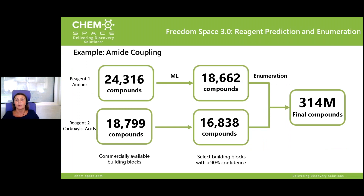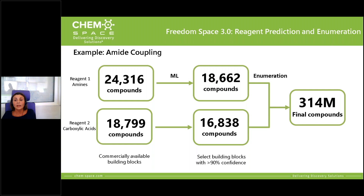The general scheme for generating this space applies machine learning models to select reagents for generating molecules with high synthetic viability by filtering out potentially bad reagents. Enamine provided us with statistics for each reagent for particular reactions. We used ML classification to filter out potentially bad reagents from commercially available reagents, selecting a threshold of 0.8 to filter out up to 83% of bad reagents. For amide coupling alone, we selected good reagents from amines and carboxylic acids, enumerated them, and ended up with 315 million final compounds. The same workflow was applied to all eight reactions selected for the Freedom Space, resulting in a final total of 5 billion molecules.